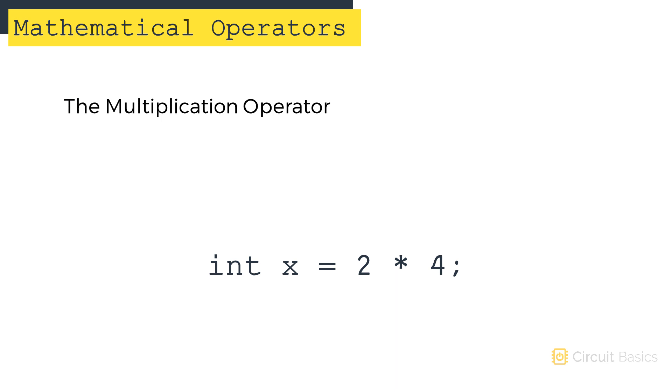Multiplication is the asterisk. This will store the result of 2 times 4, or 8, in the x variable. And division is the forward slash. 4 divided by 2 is 2, so 2 will be stored in the x variable.